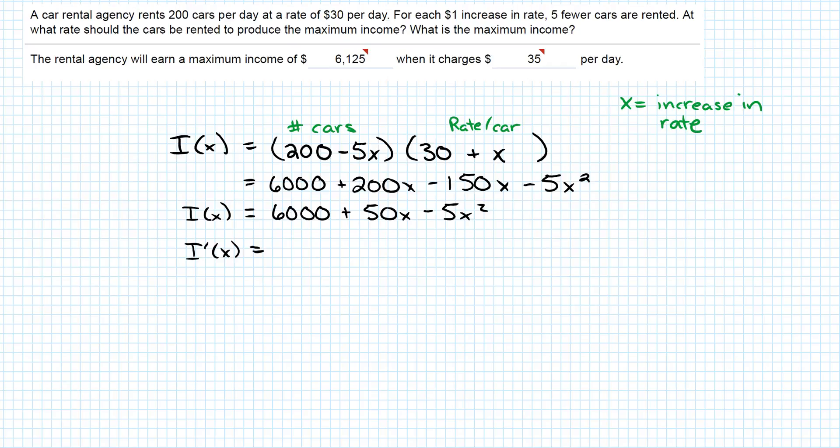I prime of X. Derivative of 6,000 is zero. Derivative of 50X is 50. The derivative of negative 5X squared is negative 10X. Found my function, took the derivative. Now I need to set my derivative equal to zero. So I have negative 10X equals negative 50, and that gives me X equals 5.